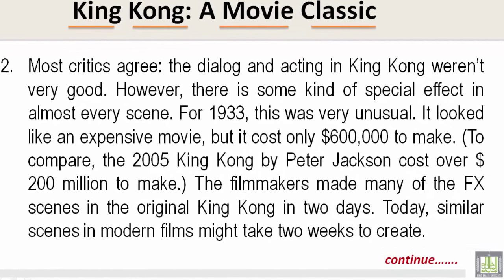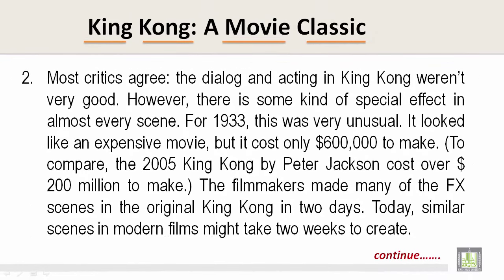Most critics agree the dialogue and acting in King Kong weren't very good. However, there was some kind of special effect in almost every scene. For 1933, this was very unusual. It looked like an expensive movie, but it cost only $600,000 to make. To compare, the 2005 King Kong by Peter Jackson cost over $200 million to make. The filmmakers made many of the FX scenes in the original King Kong in two days. Today, similar scenes in modern films might take two weeks to create.